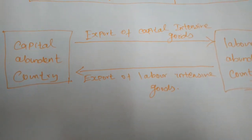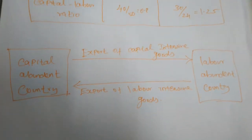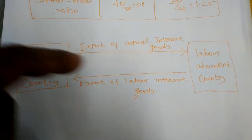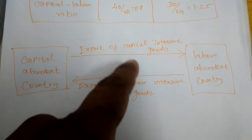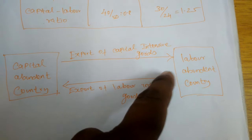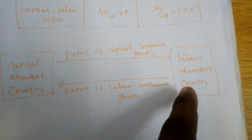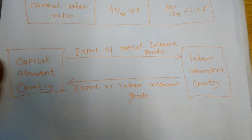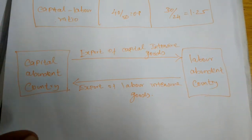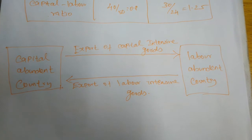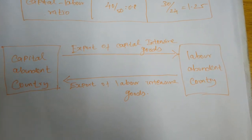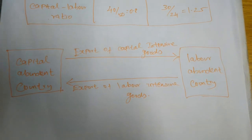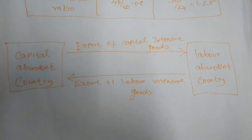Simply put, in the Heckscher-Ohlin theorem, capital-abundant countries can export capital-intensive goods to labor-abundant countries, and labor-abundant countries will export labor-intensive goods to capital-abundant countries. Whichever nation has a difference in factor endowment, on the basis of that abundant factor endowment, it will get specialization.